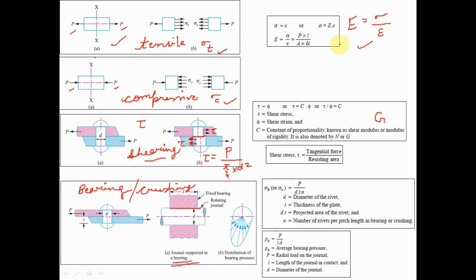Moving to the third figure, I have shown shearing stress. Shear stress and shear strain are terms you will find frequently in machine design. Shearing is the phenomenon in which a permanent fracture happens in a machine design component due to shear stress. Shearing always happens in a plane.